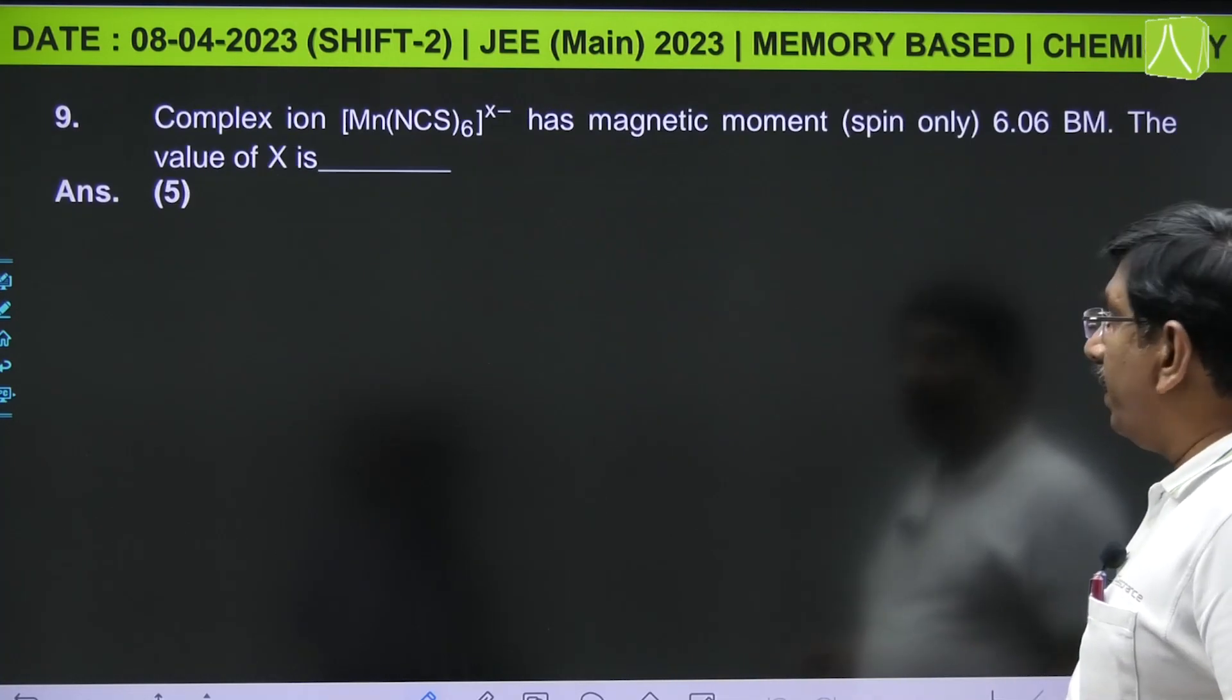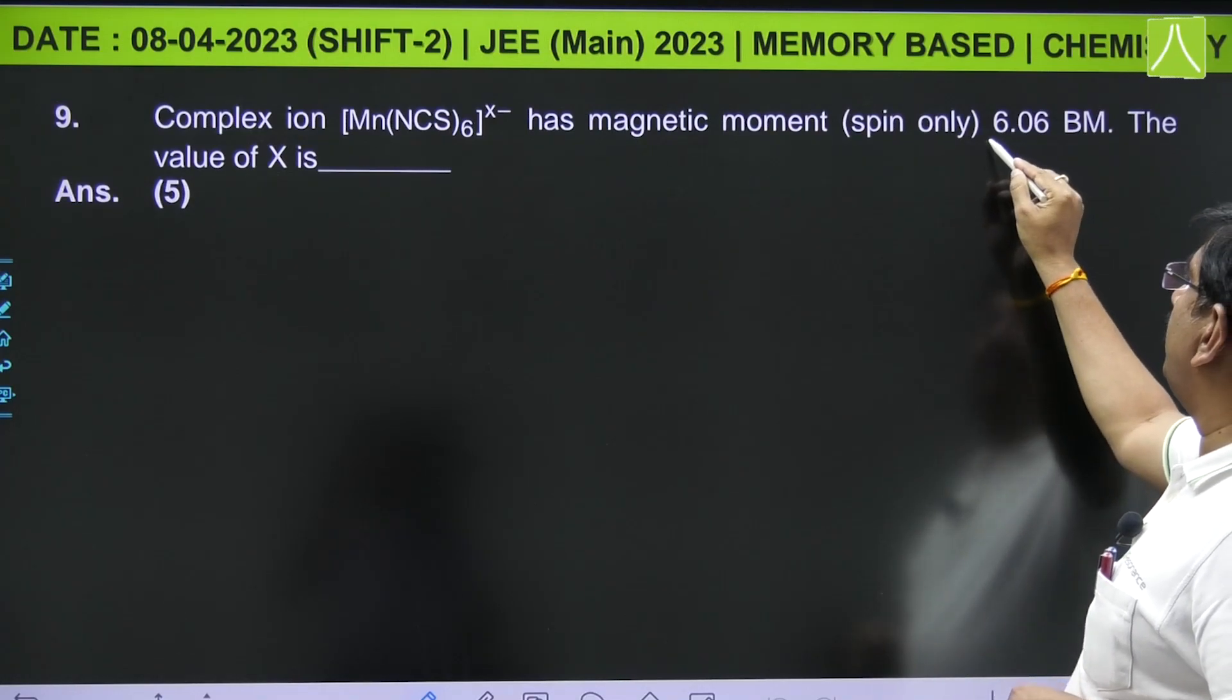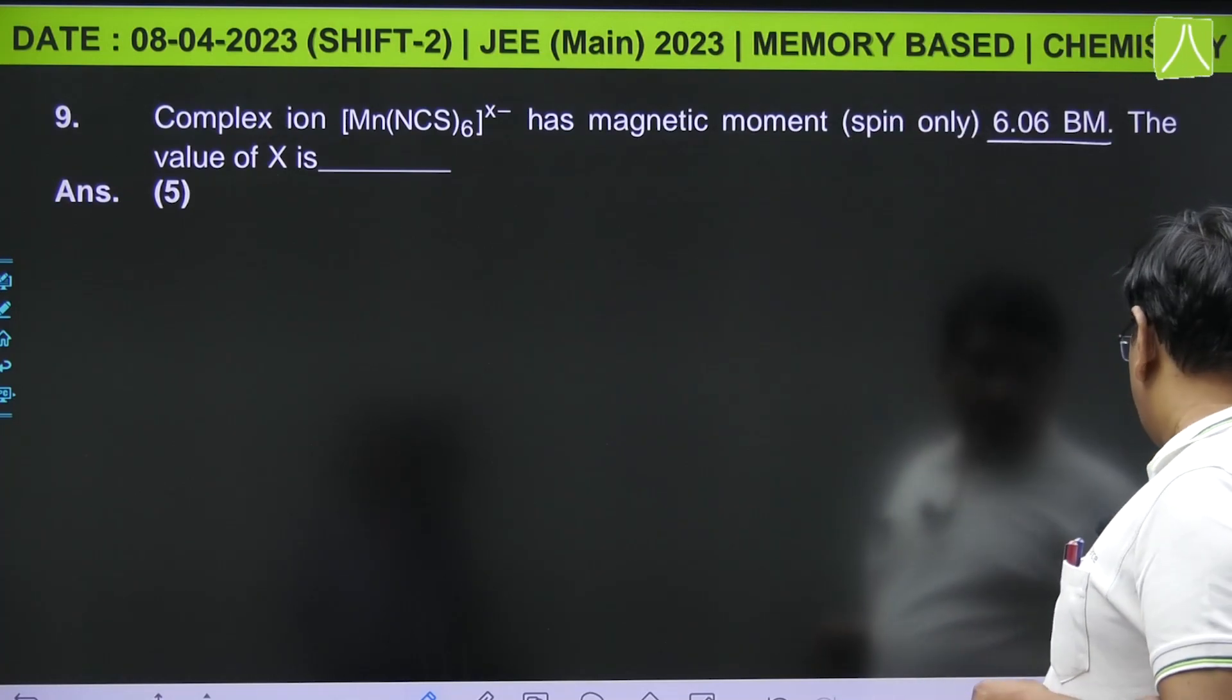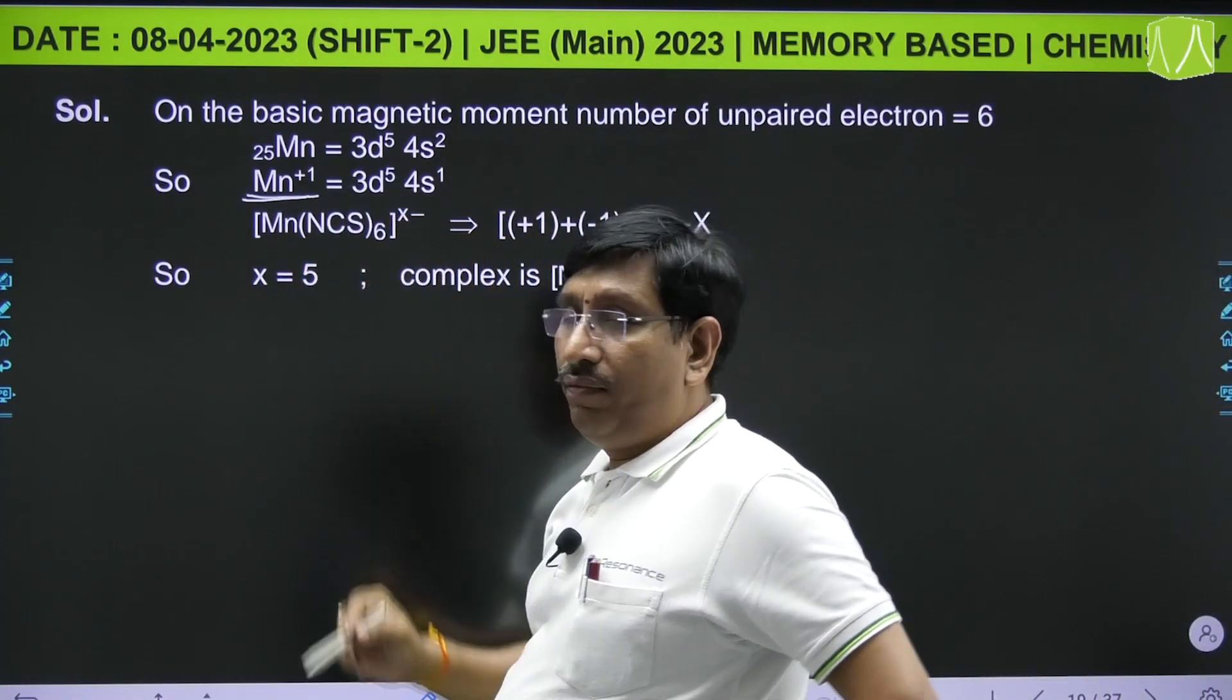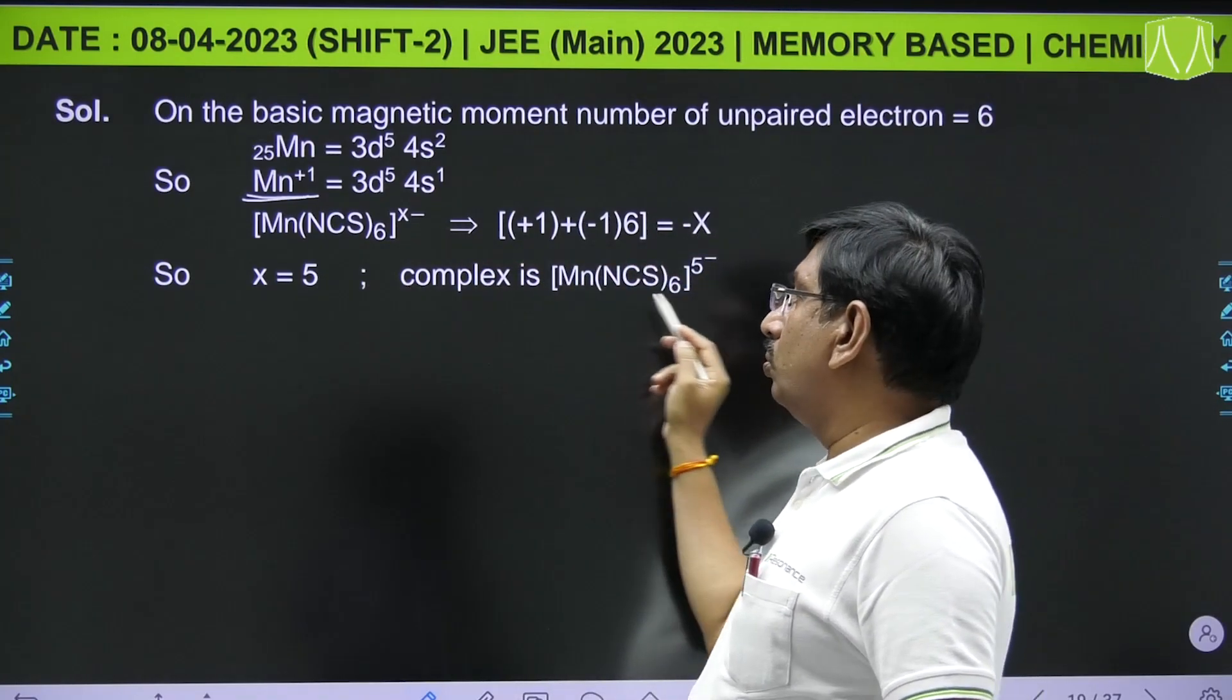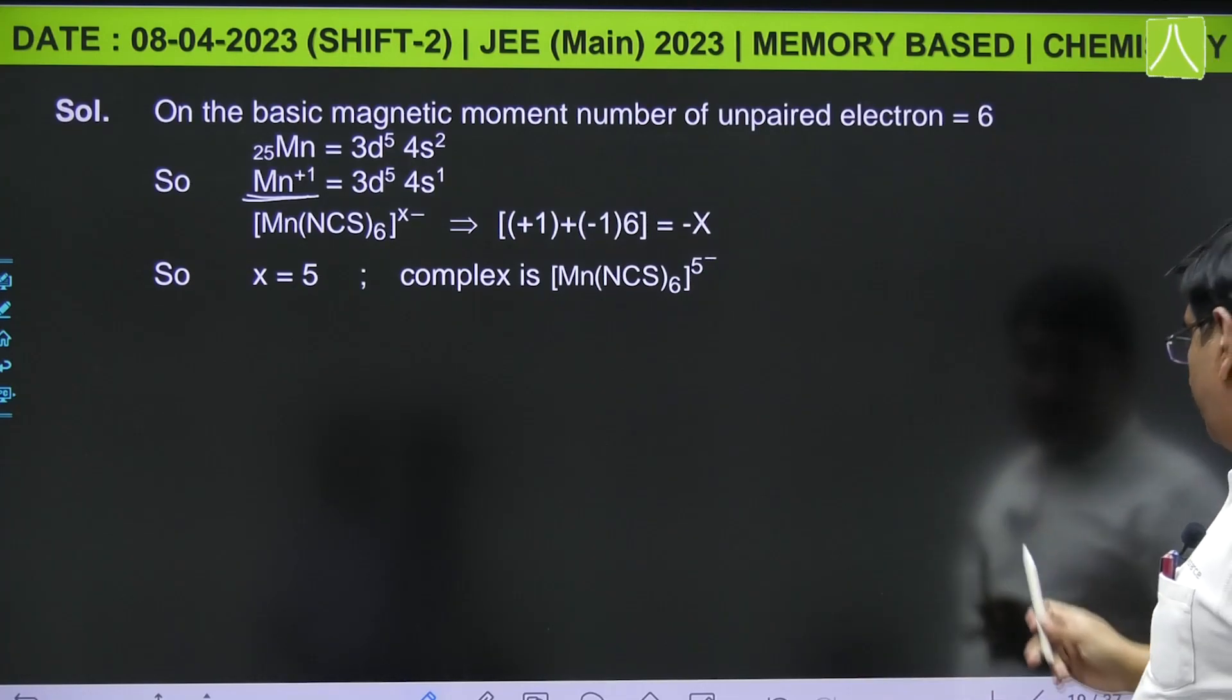Next from coordination complex: [Mn(NCS)₆]ˣ⁻ has magnetic moment spin-only that is 6.06 BM. The value of x is? From this magnetic moment, it is known that the metal Mn should have 6 unpaired electrons. So 6 unpaired electrons can be observed when Mn is in +1 state. So if it is in +1 state, then x minus means it should be 5. Here x value should be 5 and you will get the charge over this complex is 5 minus. So x value is 5.